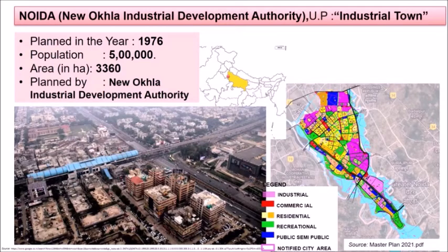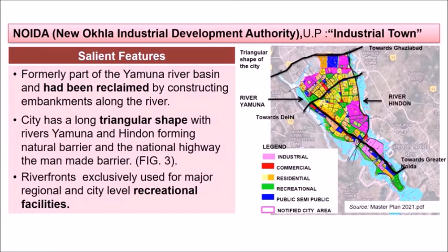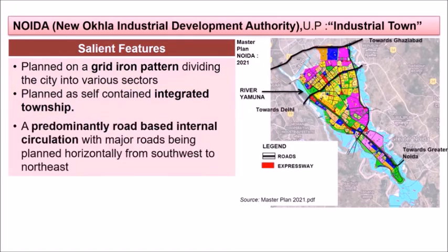From the land use map of the NOIDA township, there is an industrial area as well as a residential component. This township was formerly part of the Yamuna river basin and had been reclaimed by constructing embankments along the river. The city is triangular, with the rivers Yamuna and Hindon forming natural barriers and the national highway as the man-made barrier. River fronts have been used exclusively for major regional and city level recreational facilities.